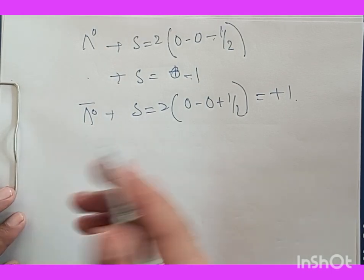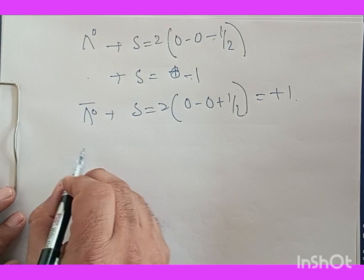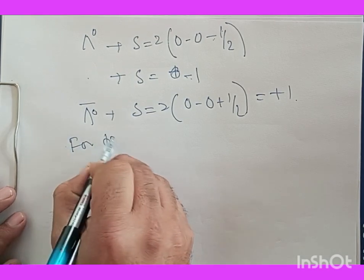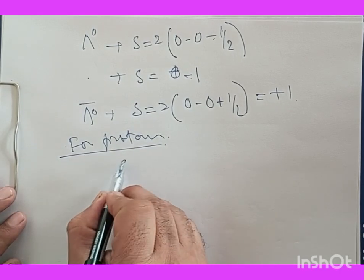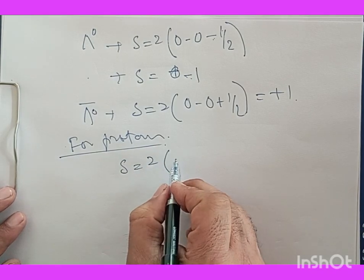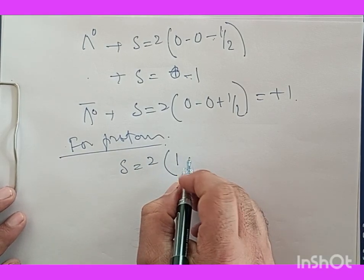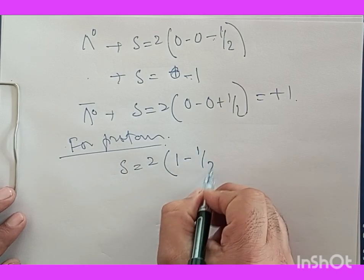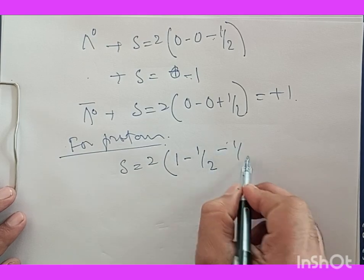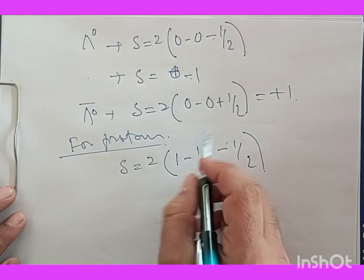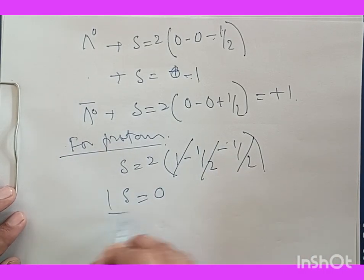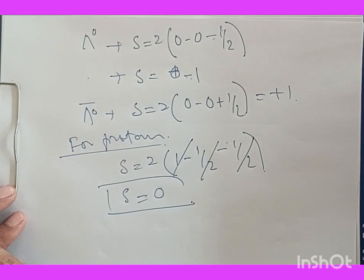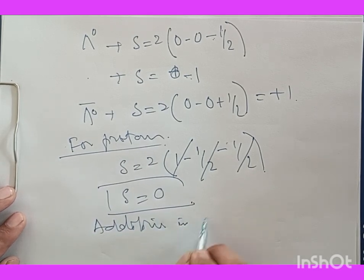For the proton, which is not a strange particle, S = 2(1) − 2(½) − 1 = 0. So the strangeness for the proton is zero. This strangeness quantum number is additive in nature.